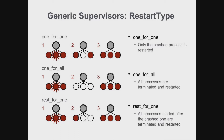In the one-for-all strategy, if a process terminates, all processes are terminated and restarted. This strategy is used if all or most of the processes in the subtree depend on each other. If a process terminates, we terminate them all and restart them one by one, hoping that whatever caused the issue will have been repaired.